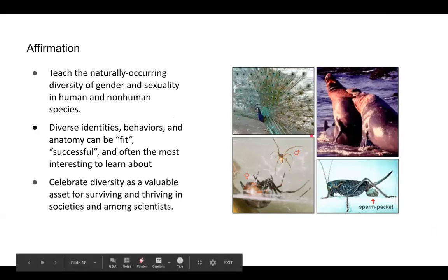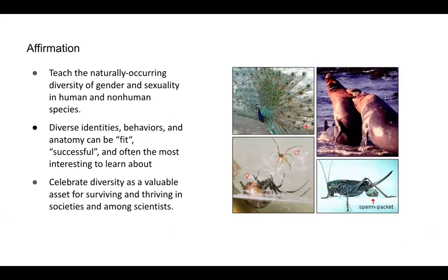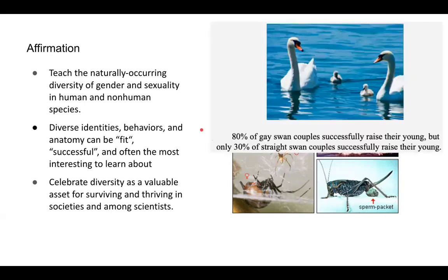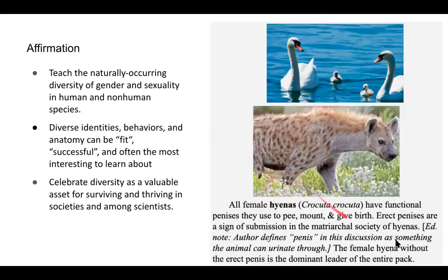It's not going to do students any good to look at four different examples of animals where males are larger or flashier — that's not going to help them understand the diversity of the world. Why do that when you can also learn about gay swan couples that are successfully raising their young more often than straight swan couples? We're using 'gay' and 'straight' here as shorthand for homosexual and heterosexual pairings. Similarly, students love to learn about hyenas and how female hyenas have functional penises — it challenges the generalizations they may have learned about anatomy, sex, and gender. We need to celebrate diversity as a valuable asset for thriving and surviving, both in societies and among scientists. It's not to compare our students to gay swans, but to show that this diversity is naturally occurring — it's not only in humans, and it's part of our understanding of biology.